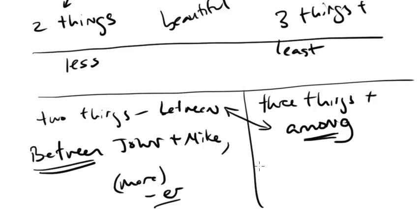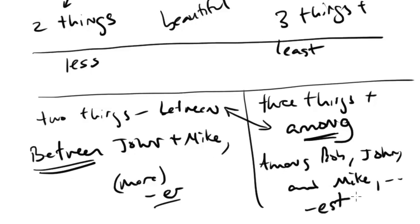So if you have three or more things, you've got to use among. So it would be like among Bob, John, and Mike, whatever. And then in this case, then, you would also use the superlative, EST. All right, so what else can we say? So that would be between and among.